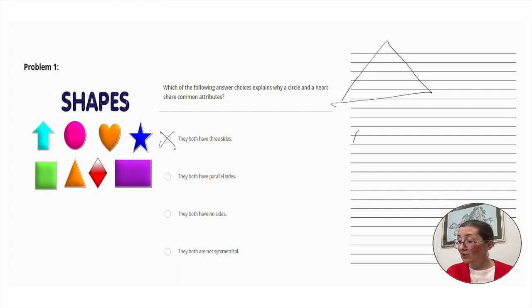Parallel sides are opposite each other and do not intersect, and this is not the case either. I want to skip down to the bottom. They both are not symmetrical. Symmetry is when you can fold a shape in half, down the middle, and the same shape. They overlap exactly. And that is the case for both of these. So it is not that.